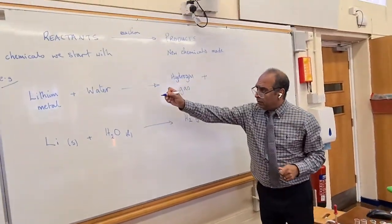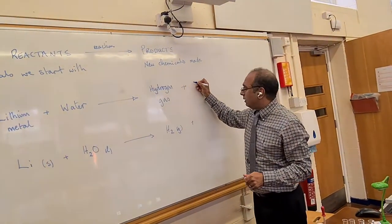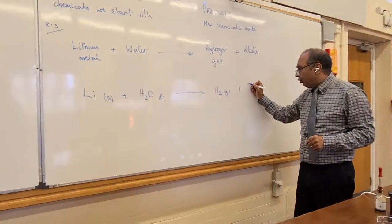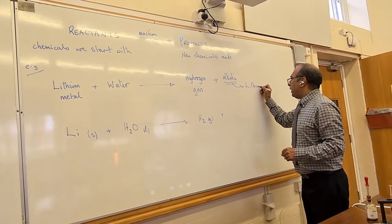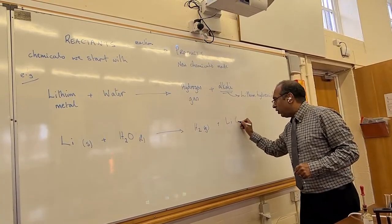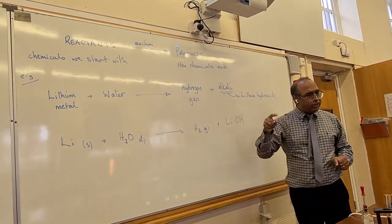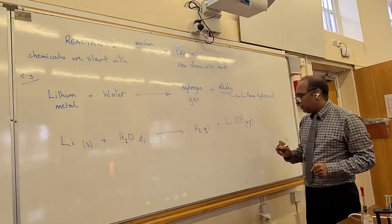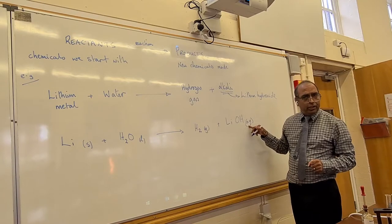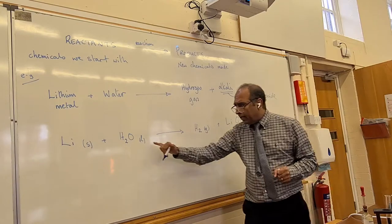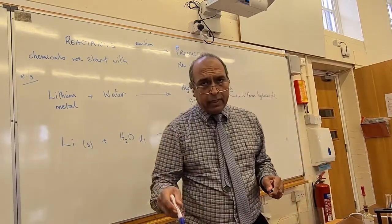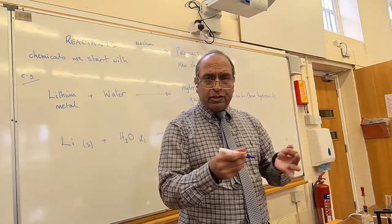The alkali produced is lithium hydroxide, LiOH. The lithium hydroxide is dissolved in the water, so it gets the state symbol (aq), which means dissolved in water. State symbols: (aq) means dissolved in water, (g) means gas, (l) means liquid, and (s) means solid. These state symbols are useful — they tell you what state each chemical is in during the reaction.